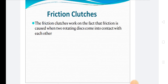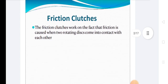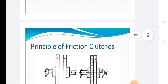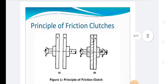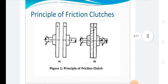Friction clutches are largely used. In friction clutches, there are three types: plate or disc clutch, cone clutch, and centrifugal clutch. In the plate or disc clutch, there are single plate clutch and multiple plate clutch types. This is the principle of friction clutches.